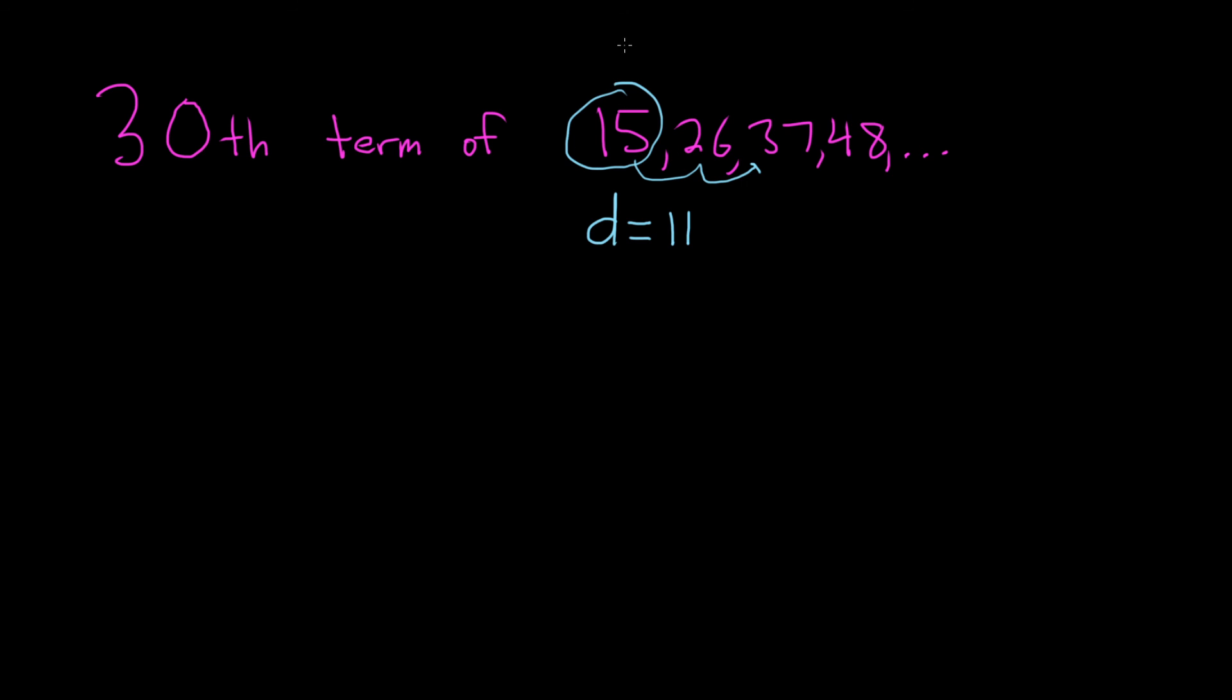Our first term here is denoted by a sub 1. So we need a sub 30, which is the 30th term. So in general there's a trick that you can use to find any term. For example, if you had to find the second term, you would take the first term, and then you would just add d one time. If you had to find the third term, you would also take the first term, but then you would have to add d two times, so 2d, etc.